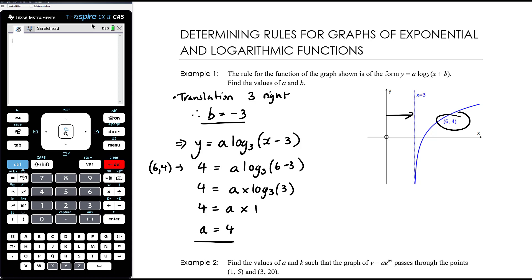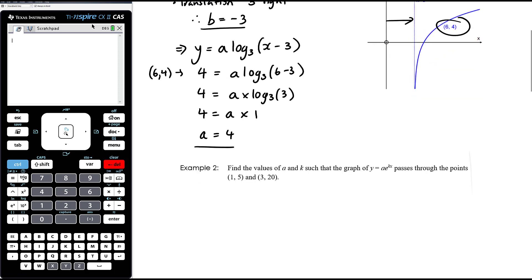We could then write out the equation as being 4 times log base 3 of x minus 3. But just making sure that you answer the question. If the question asks for the rule, make sure you summarise everything back in the rule. If the question asks for a and b, make sure you have clearly said that a equals something and b equals something.